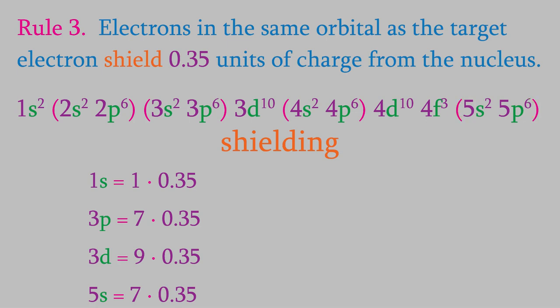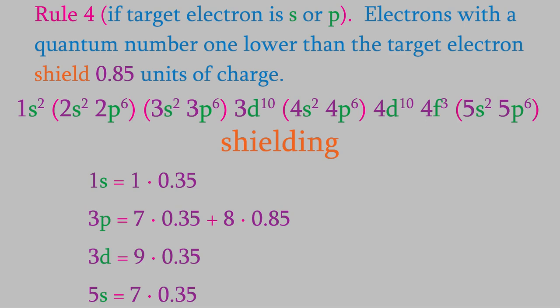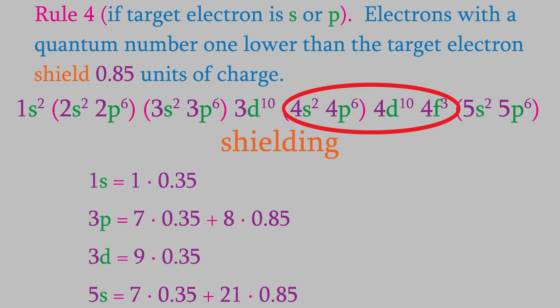The next rule is a little different depending on what kind of electron our target electron is. If our electron is in an s or p orbital, then every electron whose principal quantum number is one lower shields 0.85 units of charge. There are no orbitals lower than the 1s orbital, so this doesn't affect our 1s electron. However, there are eight electrons with a principal quantum number one lower than the 3p electron, so these contribute 8 × 0.85 to the shielding. The 3d electron doesn't use this rule. There are 21 electrons with a principal quantum number one lower than the 5s electron, contributing 21 × 0.85.